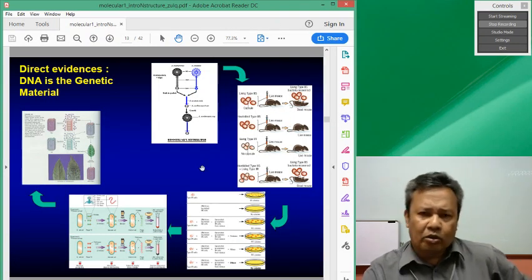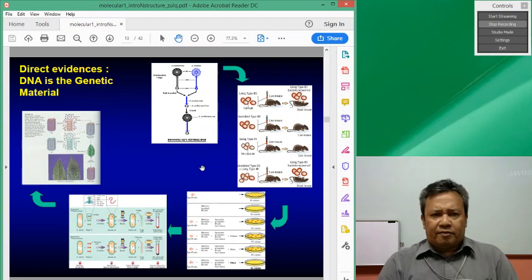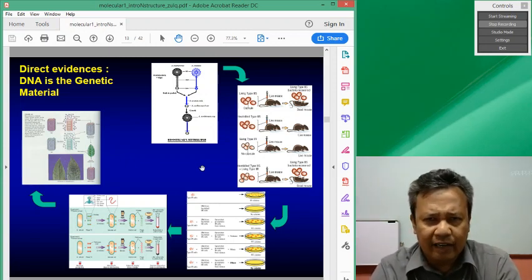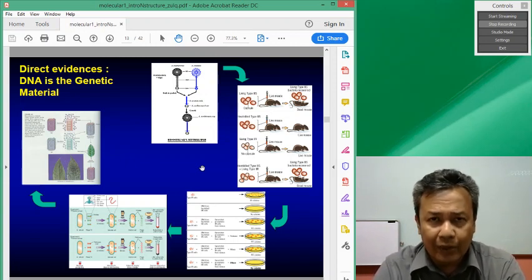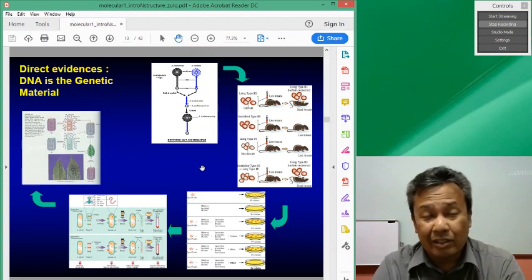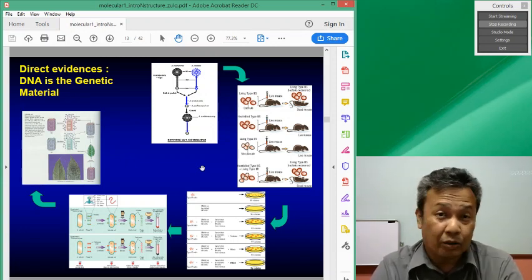Hello, we met again. So in the series of direct evidences, there are at least five different experiments that are key to showing that the nucleic acid or the DNA and later on RNA is the genetic material and not the protein.